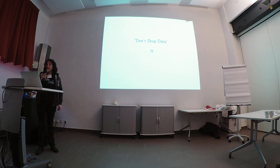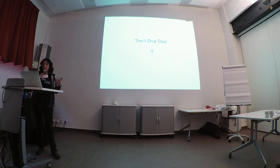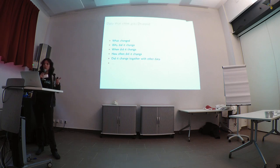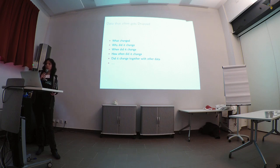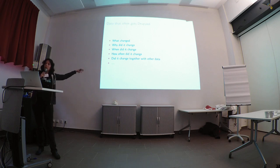We have this 'don't drop data' thing. What is data that often gets dropped? If I keep this in a relational database, I still see the sum of the current money I have. What often gets dropped is: what actually changed, why it changed, when it changed, how often it changed, whether it changed together with something else or in isolation — together with which data did it change. All these things are lost, because you only look at the end result in a relational database.